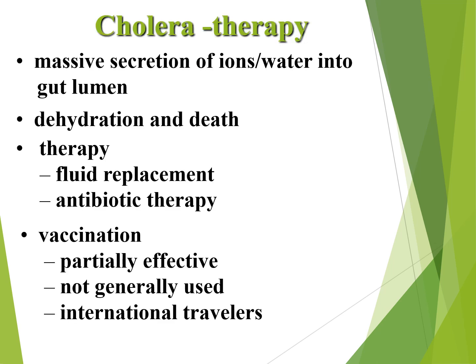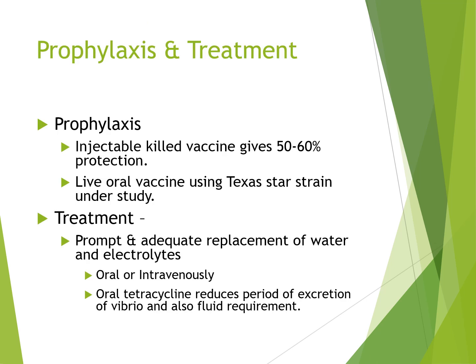With cholera, there is massive secretion of ions and water into the bowel lumen, causing dehydration and death. Therapy is through replacement — antibiotic therapy and fluid replacement. Vaccination is partially effective but not generally used. Prophylaxis: injectable cholera vaccine gives 50 to 60% protection. A live oral vaccine using Texas Star-3 is currently under study. Treatment is prompt and adequate replacement of water and electrolytes, given either orally or intravenously. Oral tetracycline reduces the period of excretion of Vibrio and also reduces fluid requirements.